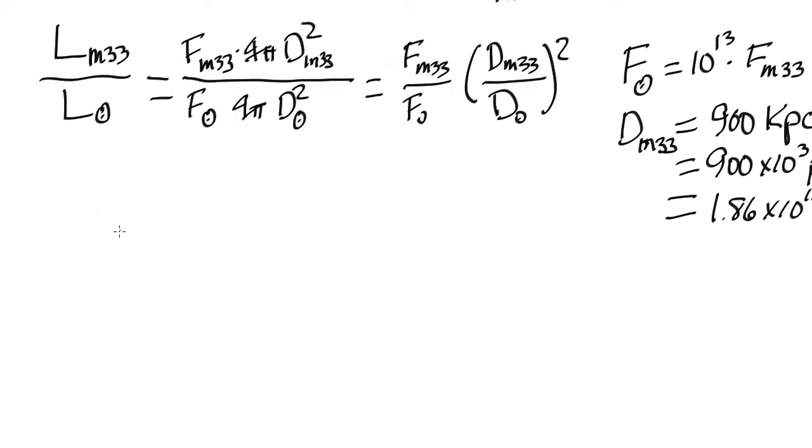Now we have all the ingredients to measure the luminosity of M33 in units of solar luminosity. L, the luminosity of M33 compared to the sun, is equal to the ratio of the fluxes, which we can see is 1 over 10 to the 13, and the ratio of the distances squared. Since the astronomical unit is the distance to the sun, we know that this is 1.86 times 10 to the 11th squared.